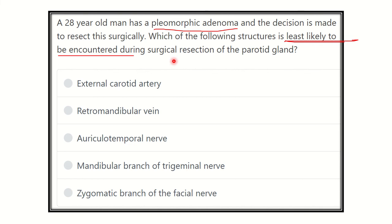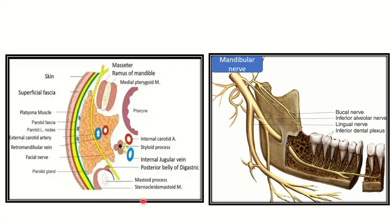The answer options are: the external carotid artery, retromandibular vein, auriculotemporal nerve, mandibular branch of the trigeminal nerve, and zygomatic branch of the facial nerve.